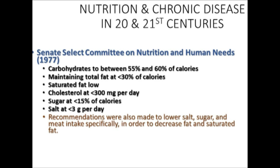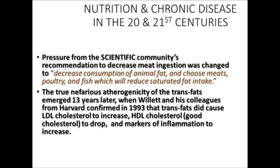Meat intake was specifically targeted to decrease saturated fat intake. However, cattle ranchers hired lobbyists to pressure the government against imposing limits on meat consumption. The recommendation to decrease meat ingestion was softened to 'decrease consumption of animal fat and choose meats, poultry, and fish which will reduce saturated fat intake' — a recommendation that did not harm the meat industry as seriously as the scientific data suggested it should.